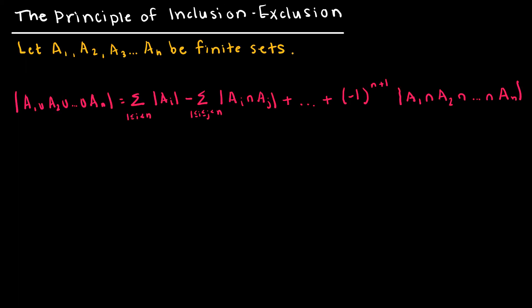Obviously there's quite a bit more practice we could do, but I wanted to introduce the concept and let you practice on your own. This is the formal definition for the principle of inclusion-exclusion. To find the union of any number of finite sets, we add all elements of each individual set, subtract the intersections of every pair of two sets, add the intersections of every group of three sets, and continue this alternating pattern all the way to the intersection of all n sets.